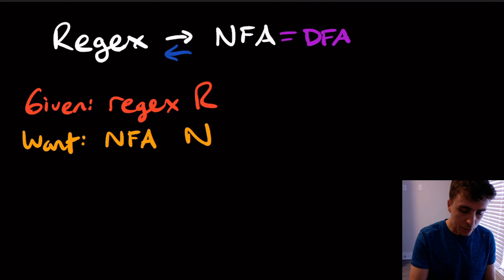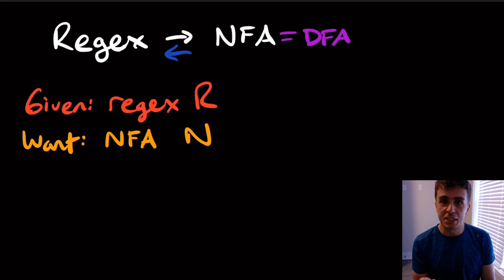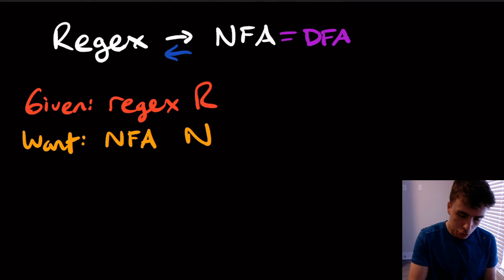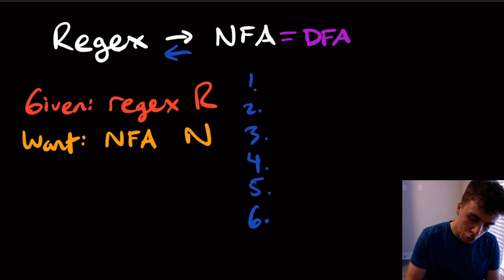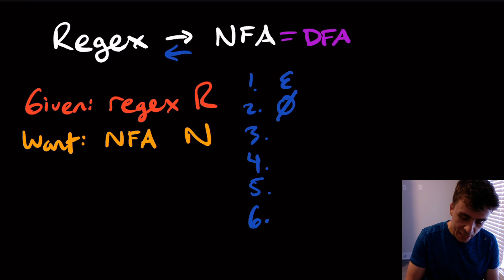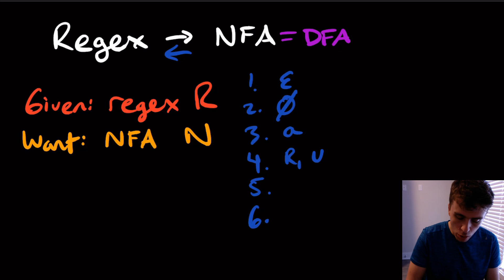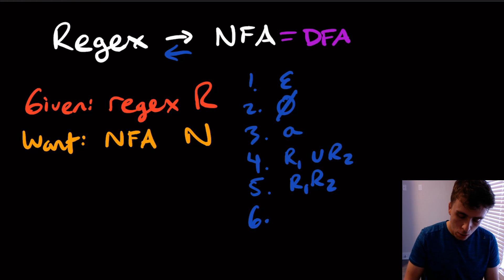So what we want to do is take a regex R and convert it to an NFA. This is actually really simple once you remember what the definition of a regex is. A regex has six possibilities: it could be the empty string, it could be the empty set, it could be a single character, it could be the union of two regexes, it could be the concatenation of two of them, or it could be one regex star.